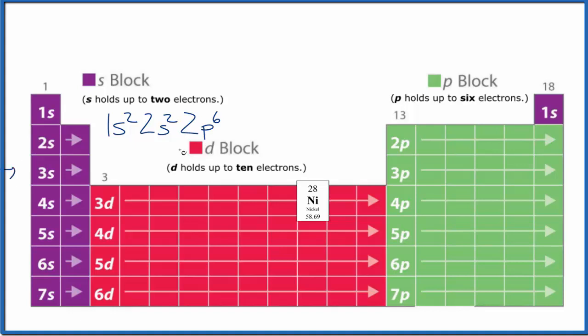Then to 3s, we have 3s2, 3p6. Then the fourth energy level, we have 4s2. And finally, we have 3d, 1, 2, 3, 4, 5, 6, 7, 8. 3d8.